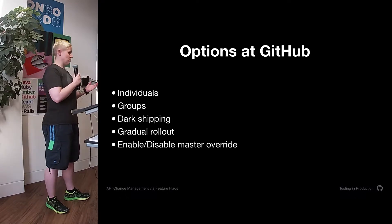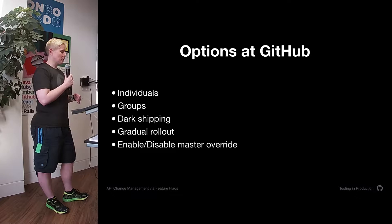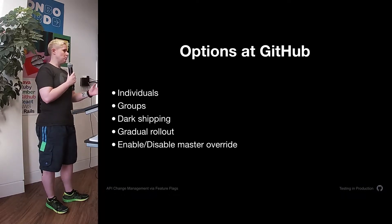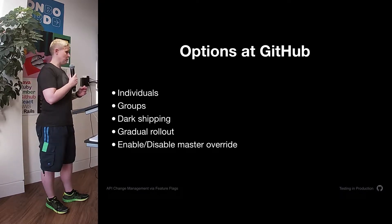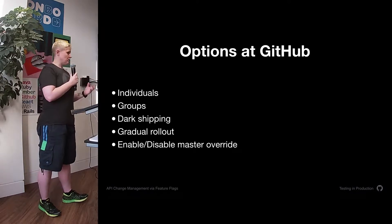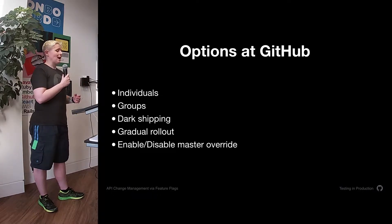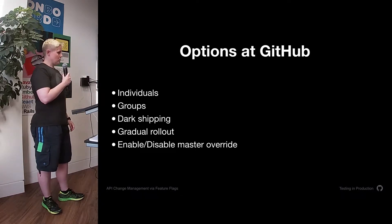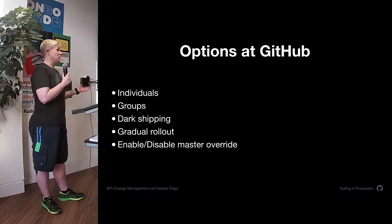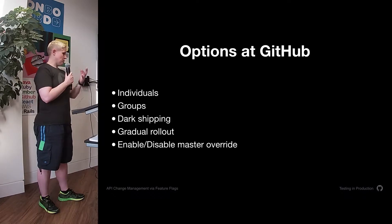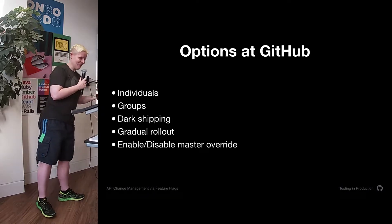We have specific options that we can turn on. There are variations within these, but the key ones are: individuals — that's a big one; groups — these can be special groups, so if you're in the Actions beta, that is a group feature flag; dark shipping to turn things on and perform experiments; and gradual rollout in 5% increments. We don't tend to do anything that's mobile or language specific, primarily because GitHub is not localised yet — it's on a future long-term roadmap. And until the recent announcement, we didn't have a mobile client for a long time, but we do now.